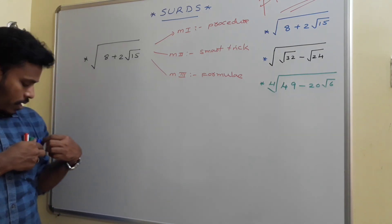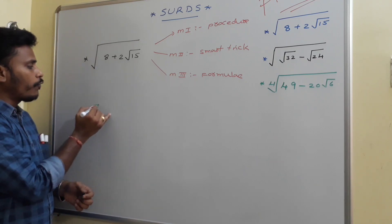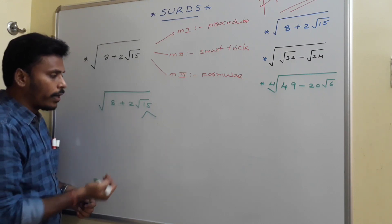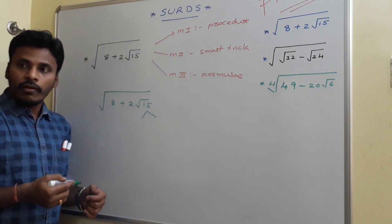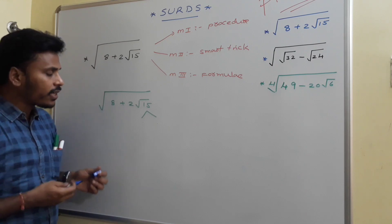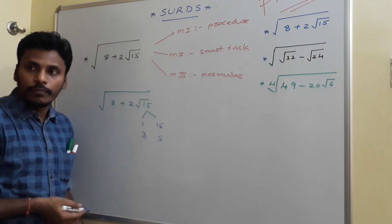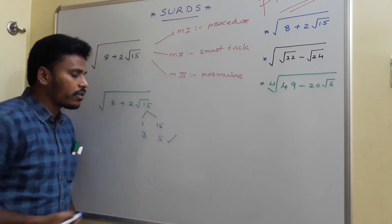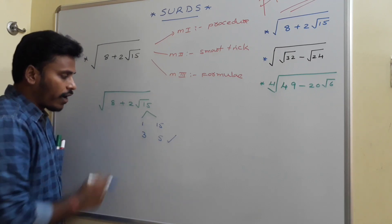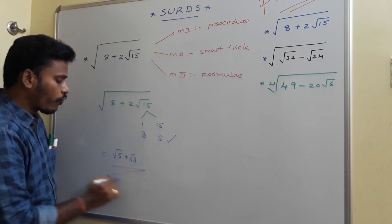For the smart trick in Method 2: to find the square root of 8 plus 2 root 15, split 15 as a product of two numbers whose sum equals 8. The possible splits include 1 times 15 and 3 times 5. Since the sum of 3 and 5 is 8, we choose 3 and 5. With this choice, the answer is directly root 5 plus root 3.